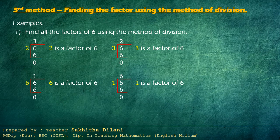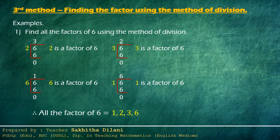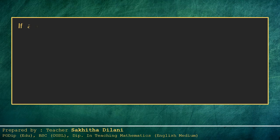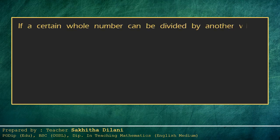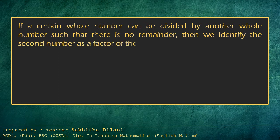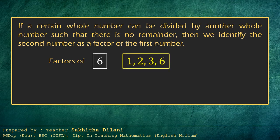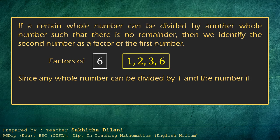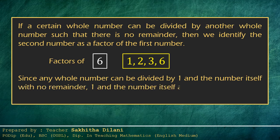Accordingly, when six is divided by any of its factors — one, two, three or six — there is no remainder. Therefore, all the factors of six are one, two, three and six. If a whole number can be divided by another whole number with no remainder, then we identify the second number as a factor of the first. Since any whole number can be divided by one and the number itself with no remainder, one and the number itself are always factors.